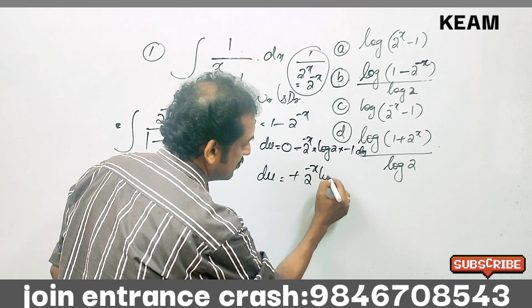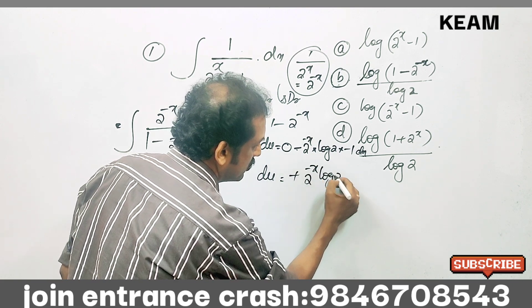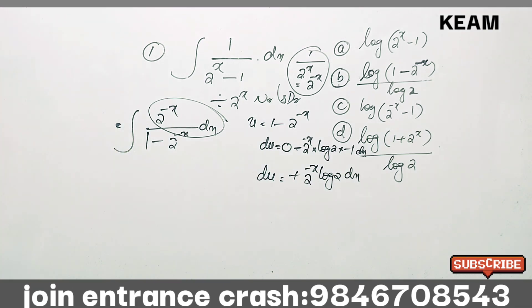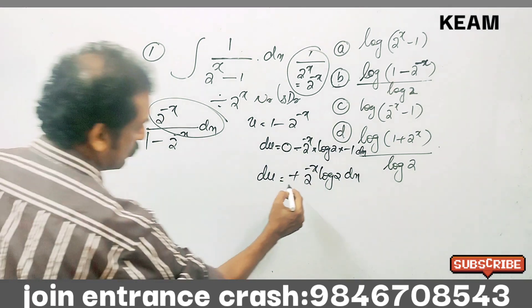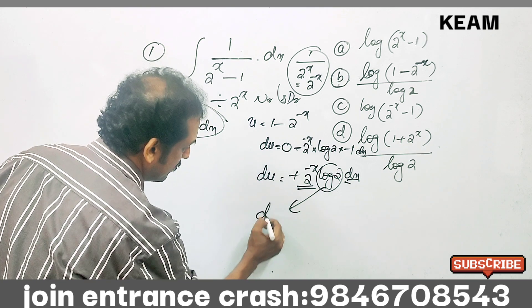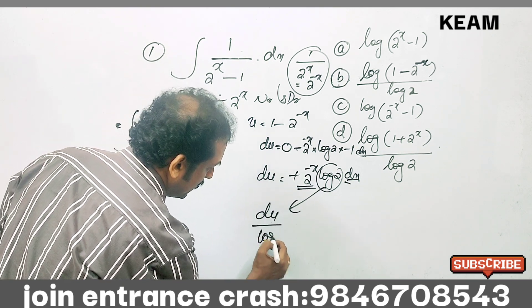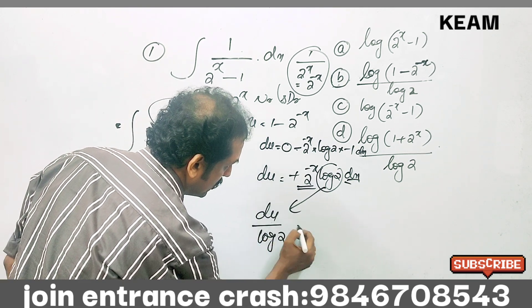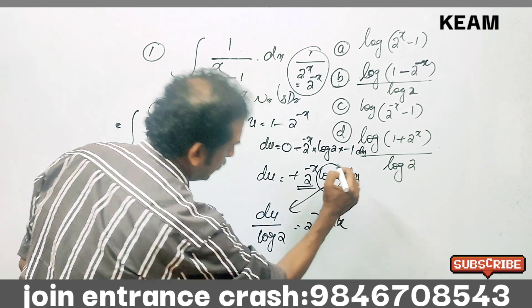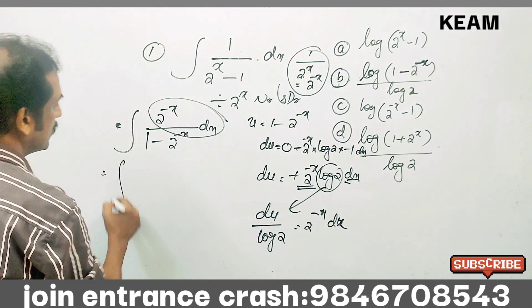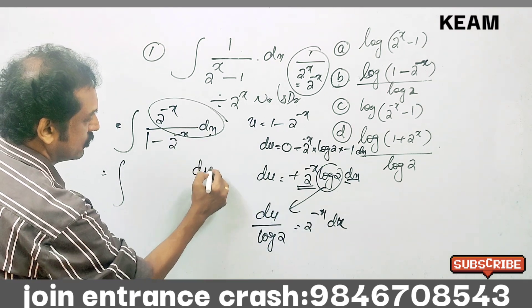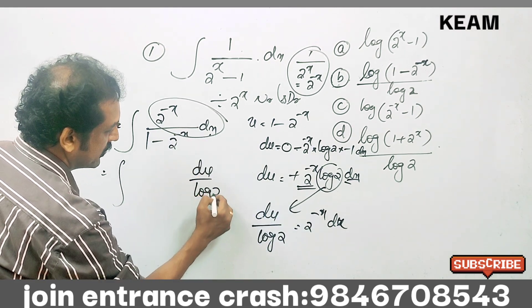That is, 2^(-x) into log 2 into dx. Comparing, we get: du divided by log 2 equals 2^(-x) dx.